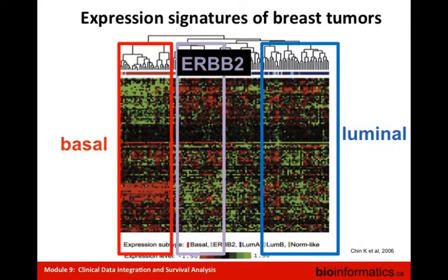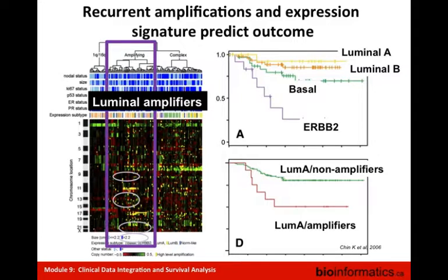Gene expression profiles have been widely used for developing expression-based biomarkers. The expression pattern of breast cancers shows distinct subtypes — basal, HER2-positive, luminal cancers — a good example of distinct histological subtypes characterized by distinct gene expression profiles. Gene expression profiles are widely used to discriminate cancer subtypes that have distinct clinical outcomes. Here you see Kaplan-Meier curves for luminal A, luminal B, basal, and ErbB2 subtypes, which have completely different survival experiences. We will discuss Kaplan-Meier curves in greater detail later.